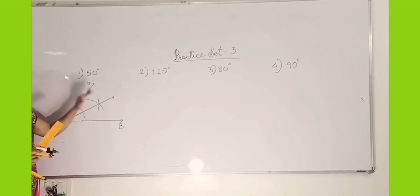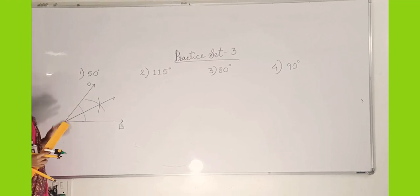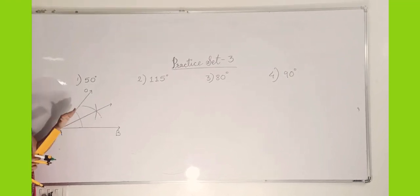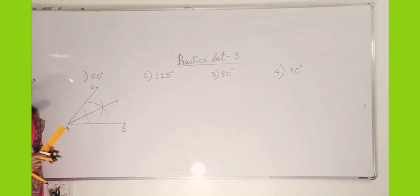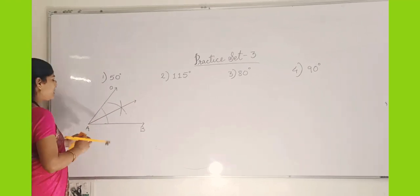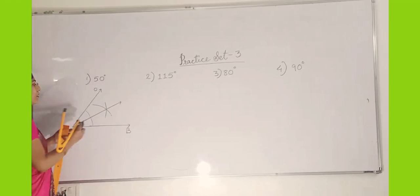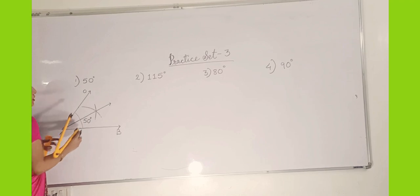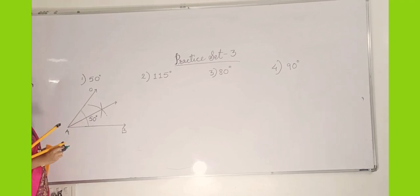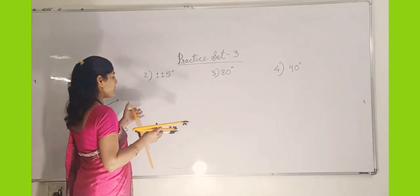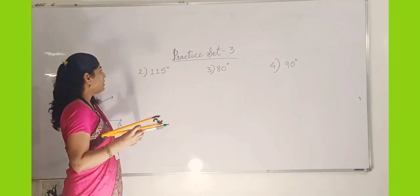So that is how we bisect angles. The bisector divides the angle into two equal parts. This is the 50-degree angle, so we will write the measurement of the angle — that is very important. Now see the next one: the 150-degree angle.